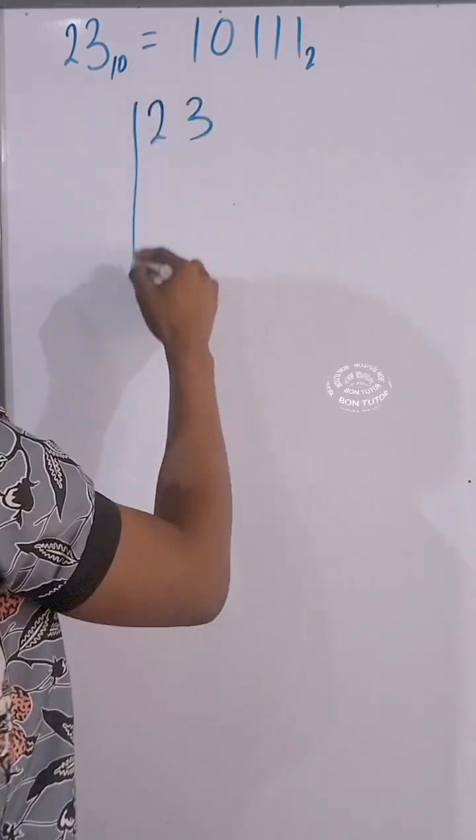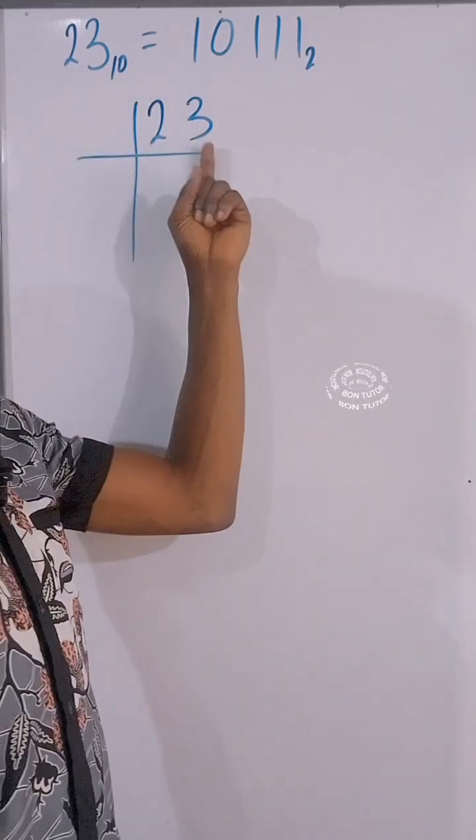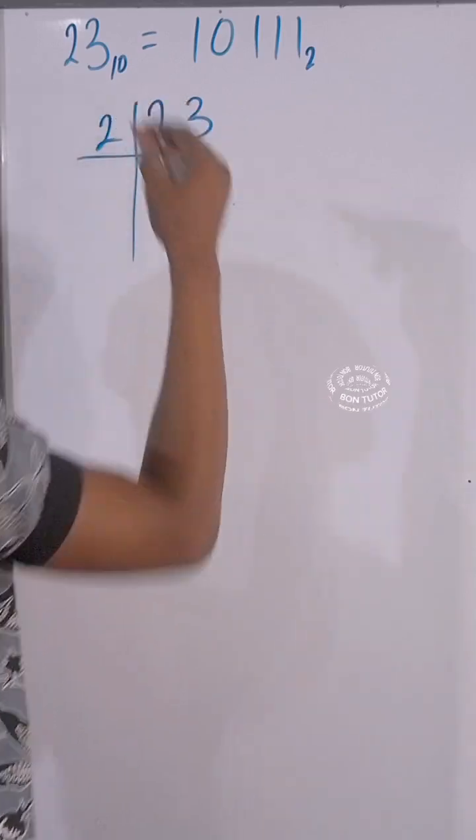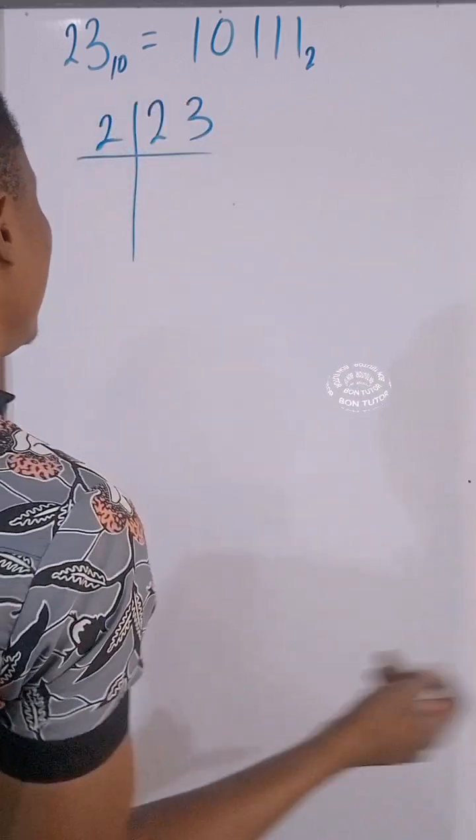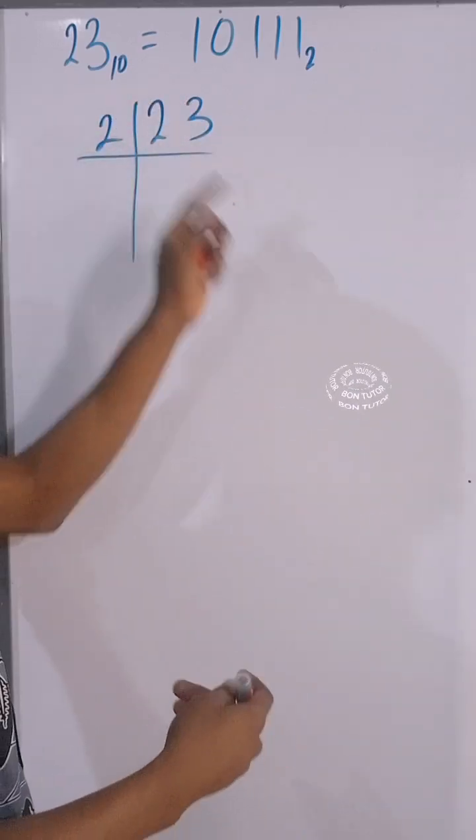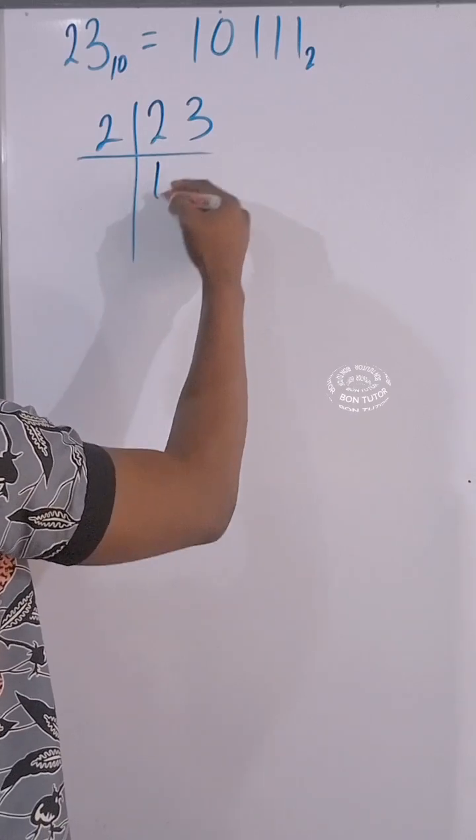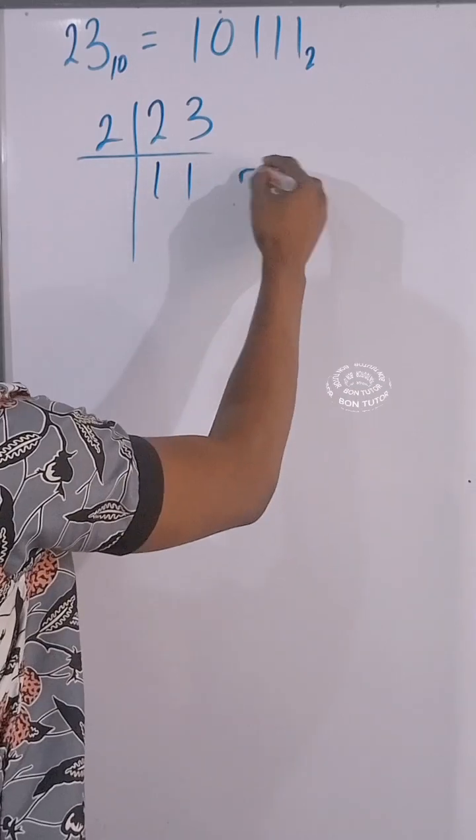Let's convert 23 to base 2. That means we're going to be dividing it by two. Let's use the long division method. If you're dividing 23 by 2, 2 will go there 11 times and you have remainder 1.